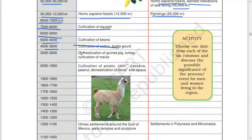4,000 to 3,000: cultivation of cotton, bottle gourd. 3,000 to 2,000: domestication of quinoa pig. 2,000 to 1,900: cultivation of potato, chili, cassava, peanut, domestication of llama and alpaca.